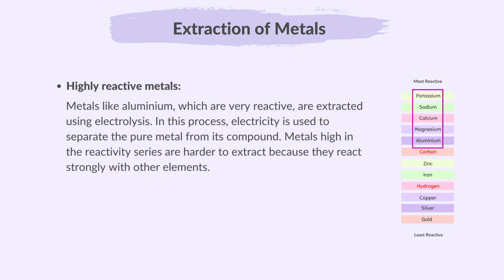Metals like aluminium, which are very reactive, are extracted using electrolysis. In this process, electricity is used to separate the pure metal from its compound. Metals high in the reactivity series are harder to extract because they react strongly with other elements, and that is why they often need complex methods like electrolysis.